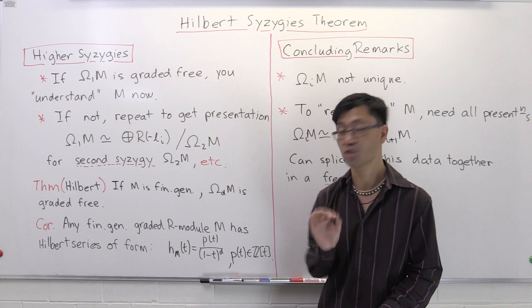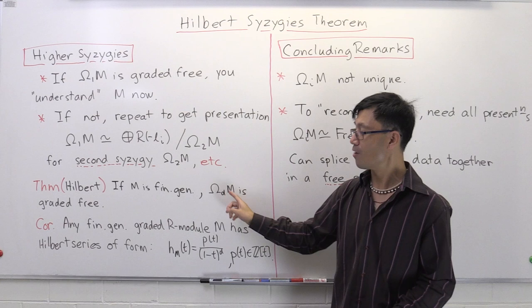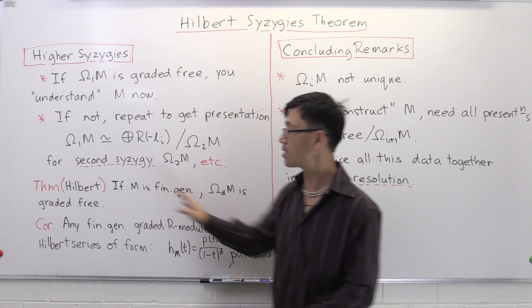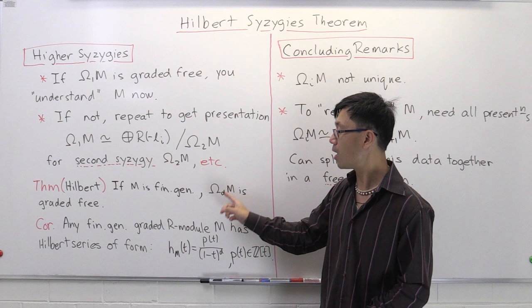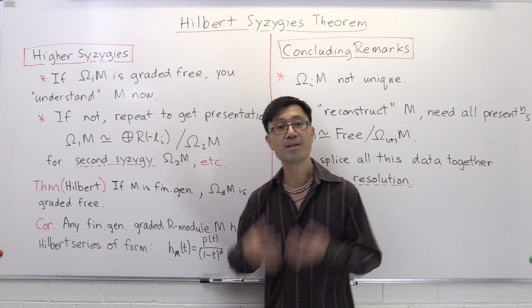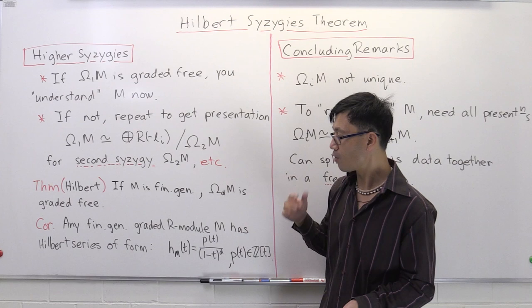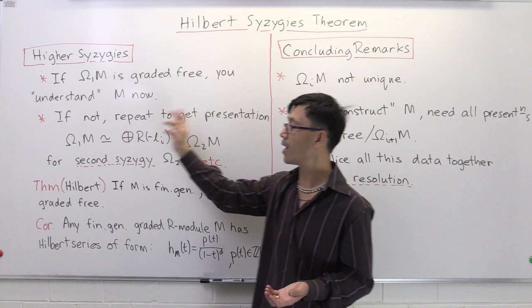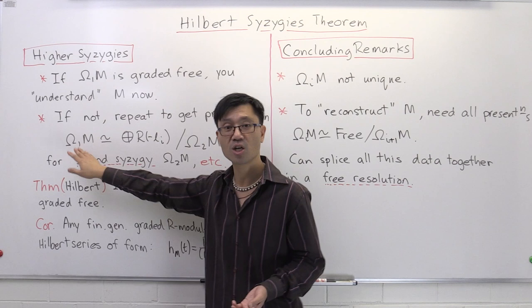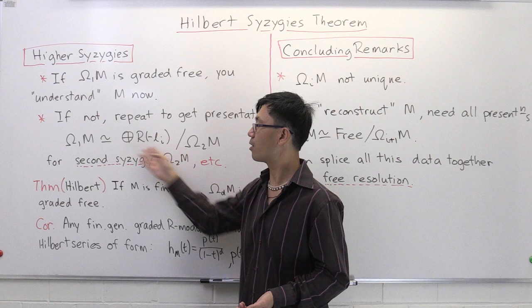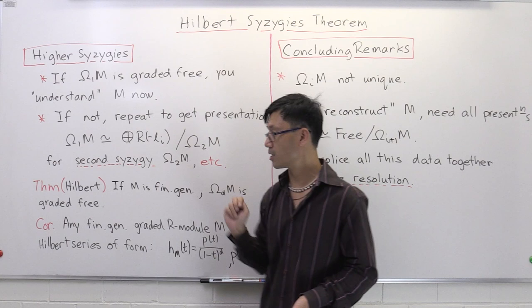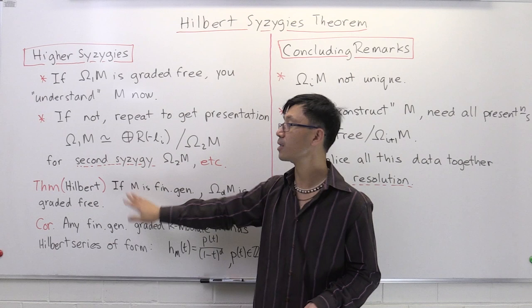What's wonderful about Hilbert's theorem is that this process terminates in a certain sense. If M is finitely generated, then the d-th syzygy is actually graded free — where d is the number of variables of the polynomial ring. So at some point, specifically by the d-th step, the syzygy is guaranteed to be graded free. This gives you an actual way to understand the module M. Using this inductively, you can work out the Hilbert series of M if you have all this information.